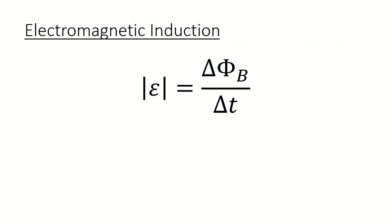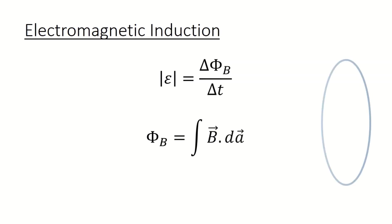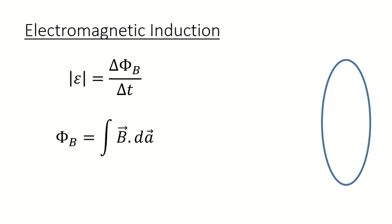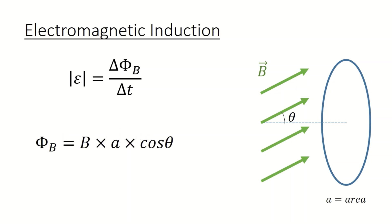Notice that in order to get an induced emf, the magnetic flux has to change over time. The magnetic flux is defined as the integral of B dot dA. Suppose you have a conducting loop of area A, and we have a uniform magnetic field directed at an angle theta with the perpendicular to the plane of the loop. The magnetic field has a constant magnitude and direction, so the integral reduces to B times A times cosine theta.